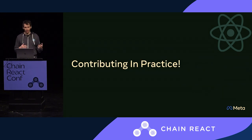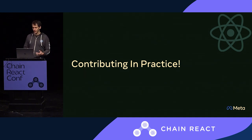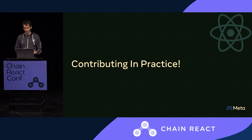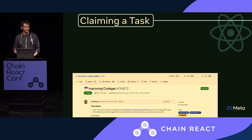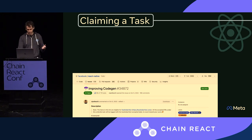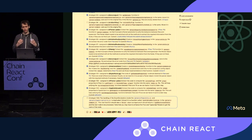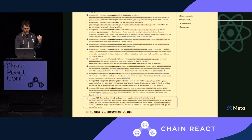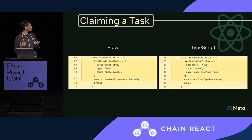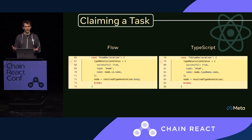So how does this process work if you want to start contributing? For claiming a task — using CodeGen as an example — we navigate to the repository, scroll to find a task we like, and the task is self-contained. There are code pointers to look up. In this case, clicking a couple of links shows two parsing code files, one for Flow and one for TypeScript — they're very similar, so there's no real reason for the code duplication.